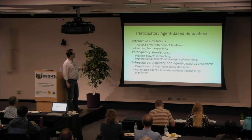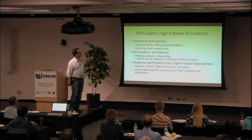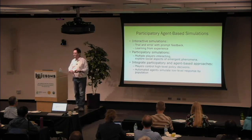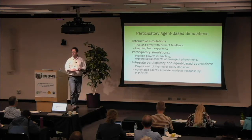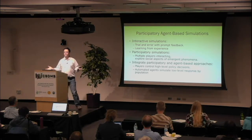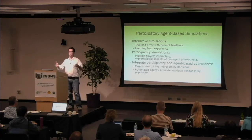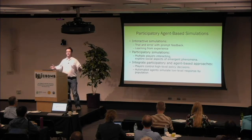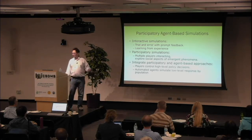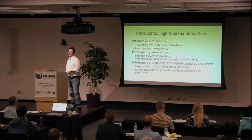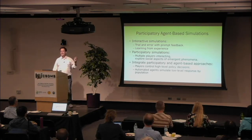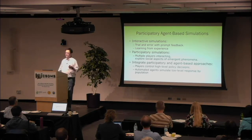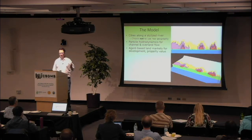We developed a participatory, interactive simulation that provides users with trial and error — they can try things out, get prompt feedback, and learn from experience. Multiple players interact with the model at once and then interact socially with each other. We integrate participatory and agent-based approaches: players are high-level policymakers making policy for a city, and automated agents simulate low-level responses by the population. We simulate a floodplain with three cities, and colors represent flood risk.